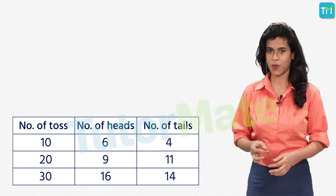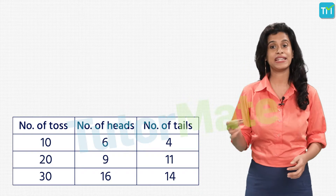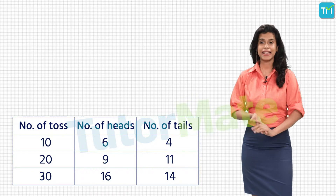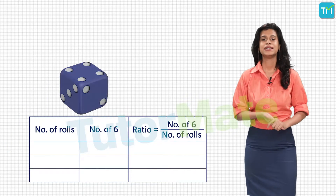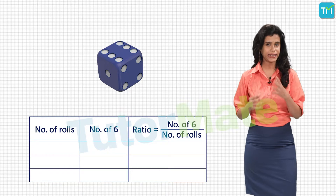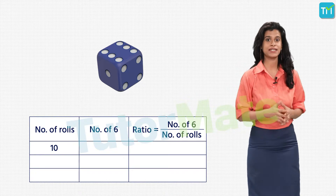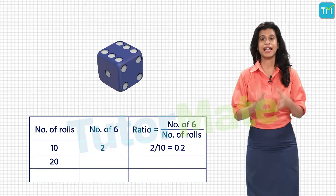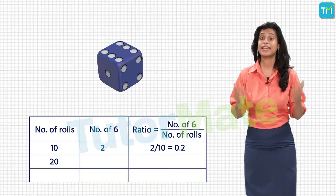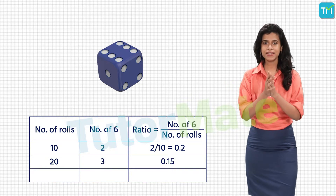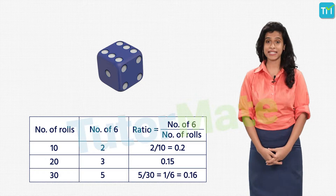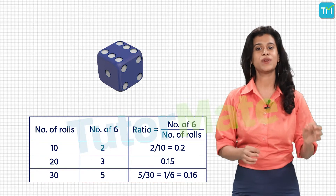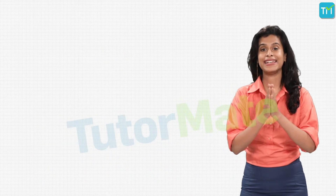Let us try another experiment using a rolling dice. Roll a dice 10 times and note the number of times you get a 6. In the next round, roll the dice 20 times and record how many times you get a 6. Again, you will see that as you increase the number of rolls, the chance of getting a 6 gets closer to 1/6.